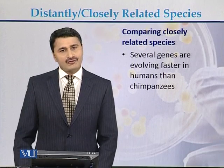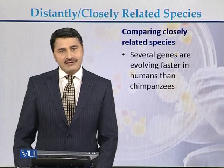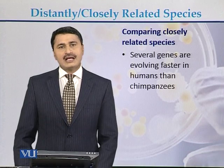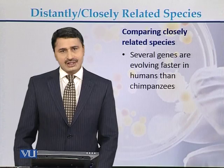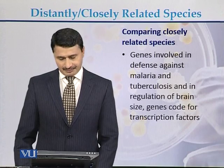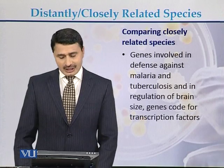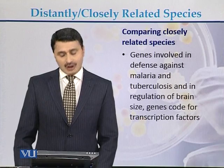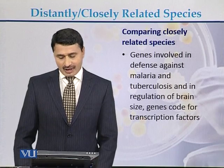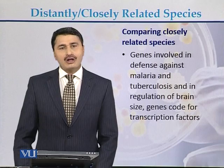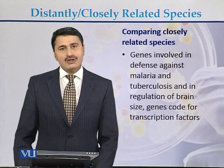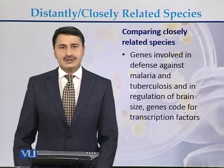Several genes are evolving faster in humans compared to chimpanzees. In humans, there are many genes which have evolved faster compared to the corresponding genes in the chimpanzee genome. These include genes involved in defense against malaria and tuberculosis, in regulation of brain size, and genes that code for transcription factors.